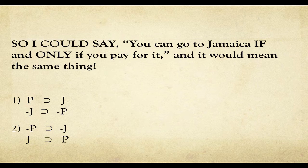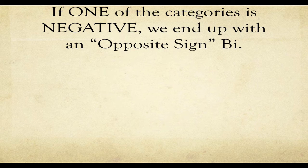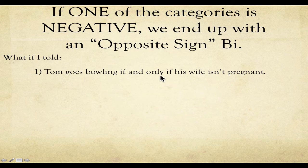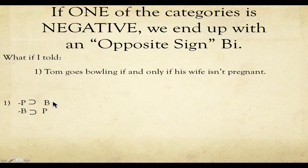If one of the terms in the original statement is negative, then we'll end up with what's called an opposite-sign biconditional. For example: Tom goes bowling if and only if his wife isn't pregnant. That means if his wife isn't pregnant, he'll go bowling. And it also means if Tom goes bowling, then his wife isn't pregnant.